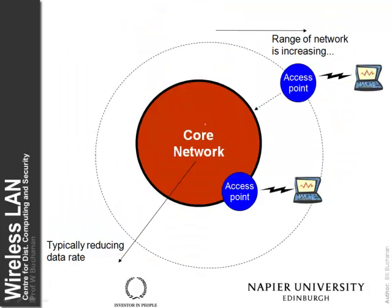Generally the speed decreases as we radiate out from the center of our network. At a core network we have high speeds, and then we generally reduce this as we go out until we meet with the client device.